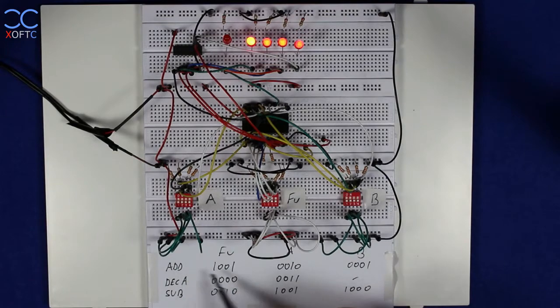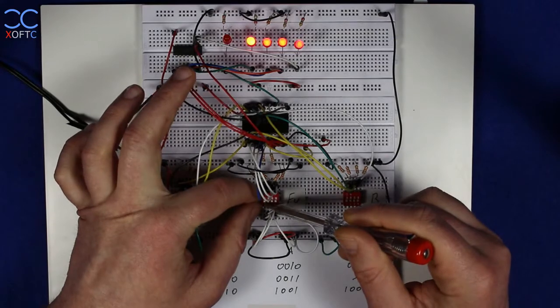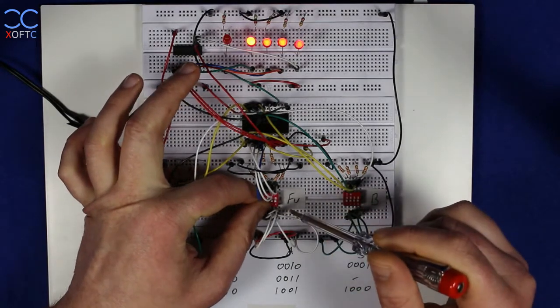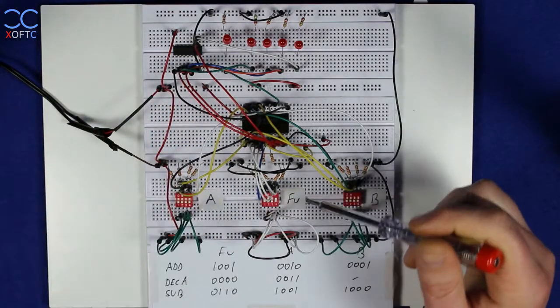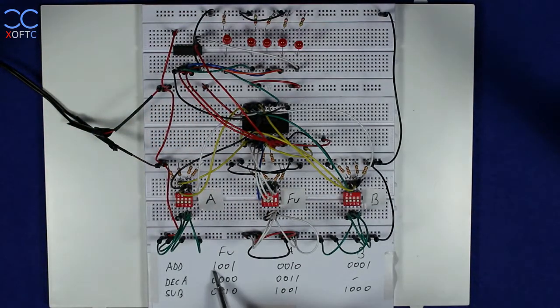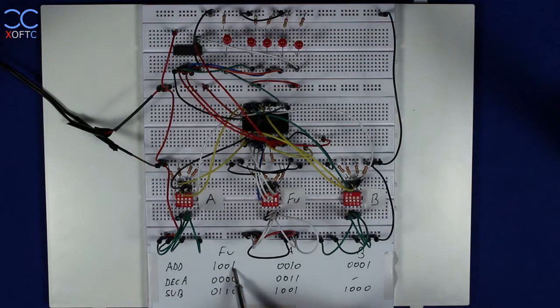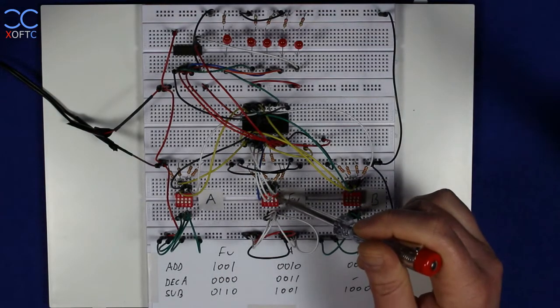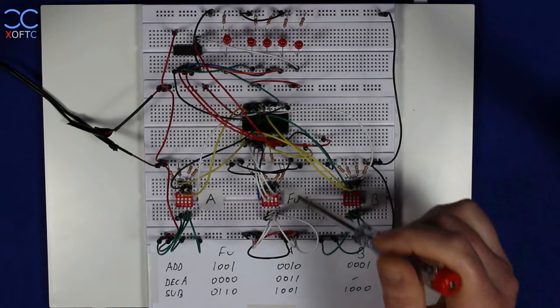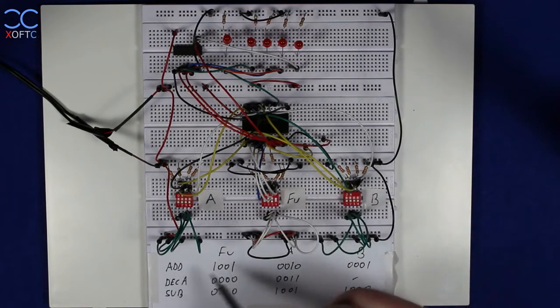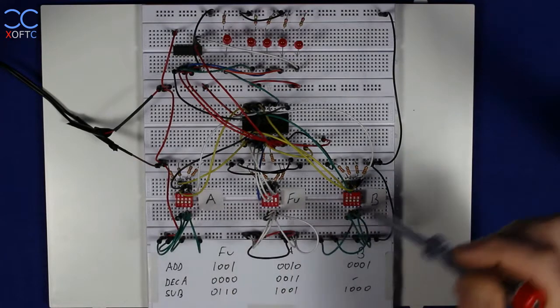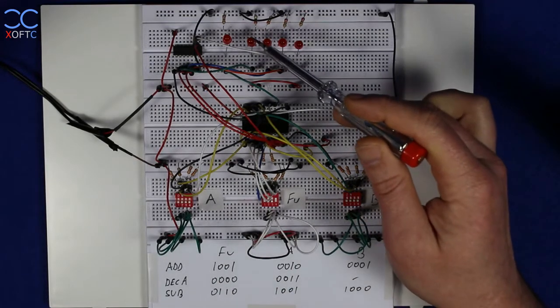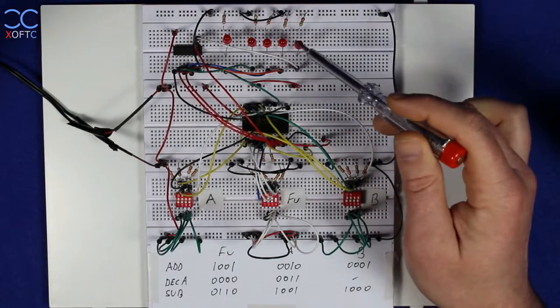So, going on to the example, we're going to start first by adding A to B. And the first thing that I'm going to do is I'm going to set the function pins to the add function. So, the add function, according to the data sheet of this chip, is high, low, low, high, starting from 0 to 3. And that's what I set here on the function pins. So, right now, we have set the add operation. We have a 0 on the A and a 0 on the B and that's why we are getting also a 0 on all the outputs.